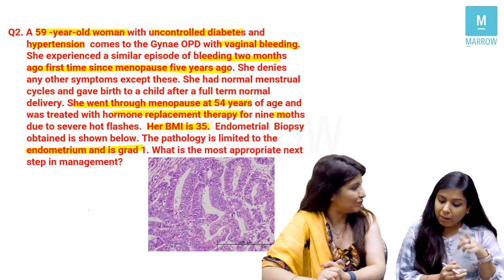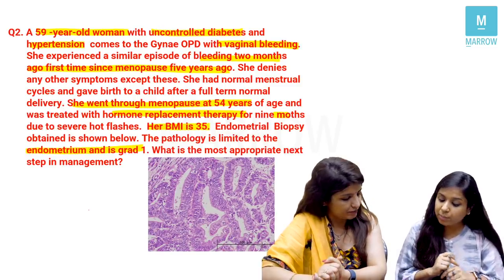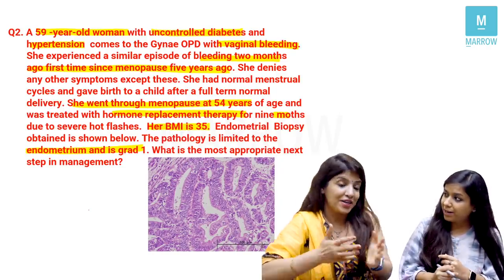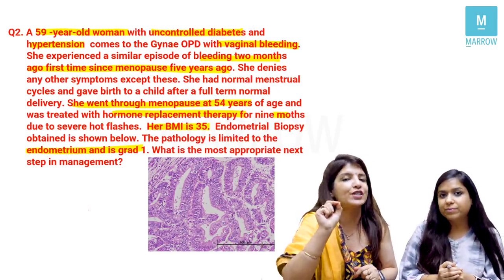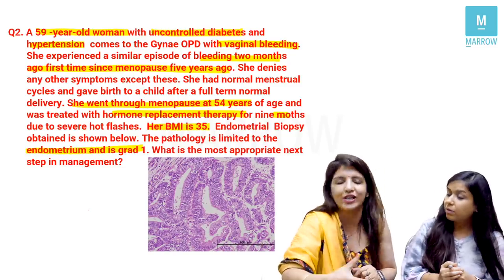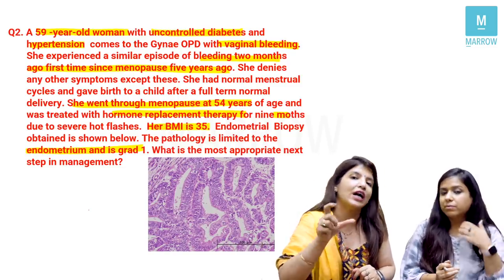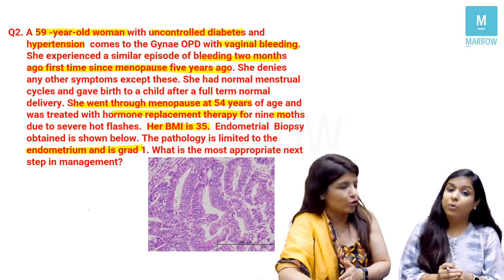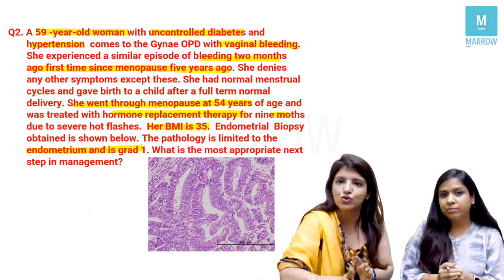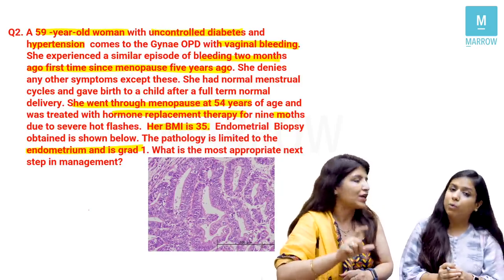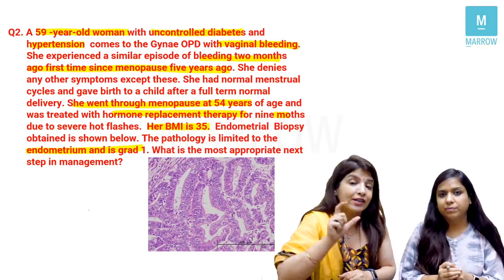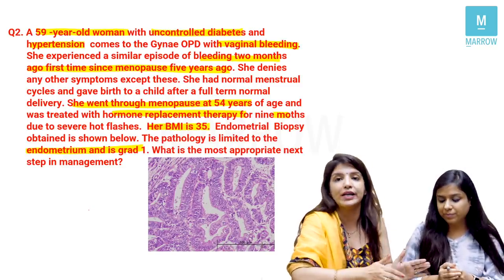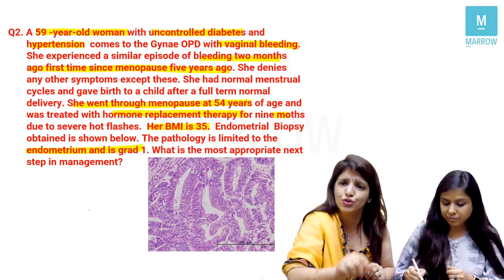Regarding the HRT history: HRT as such does not increase the risk of endometrial cancer — in fact, because of the progesterone component, it is protective. Only unopposed estrogen in HRT leads to endometrial cancer. Combined estrogen-progesterone HRT is a risk factor for breast cancer (due to the progesterone component), not endometrial cancer. The HRT history in this question is included to introduce confusion.